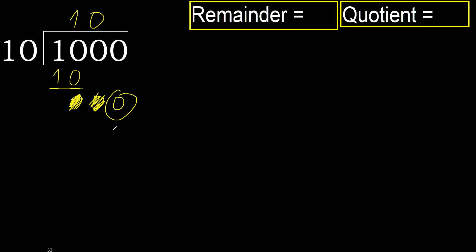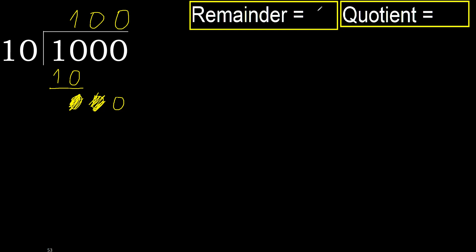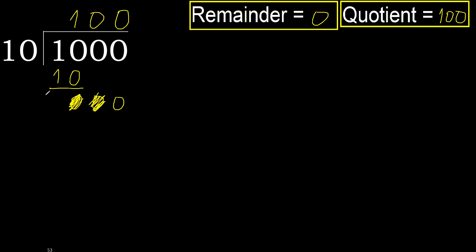Eliminate 0. 0 is less, therefore next — that is not a number, therefore finished, complete. Always complete with 0, complete because here finished with this number. Therefore, 1000 divided by 10 is 100.